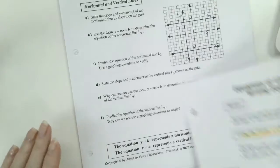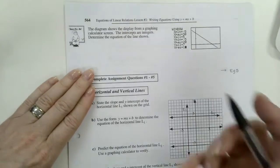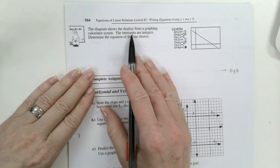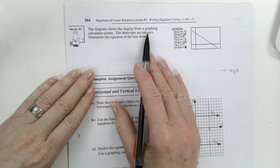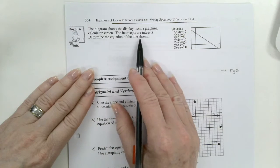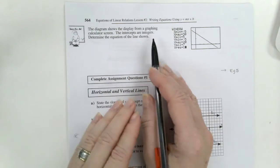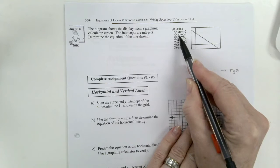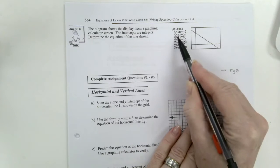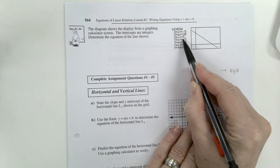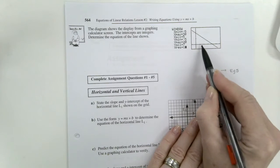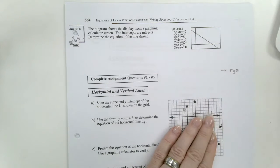Next page. The diagram shows the display from a graph calculator. The intercepts are integers. Determine the equation of the line shown below. So maximum of the x is going up to 30. And the x scale is going up by 5. We've always just used 1. And now they're going to just change it. That's okay. Up by 5. So 5, 10, 15, 20 for here.